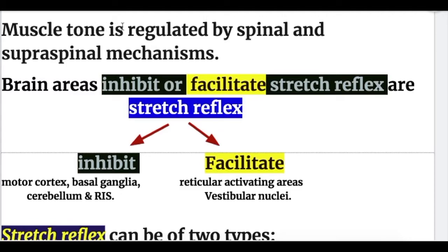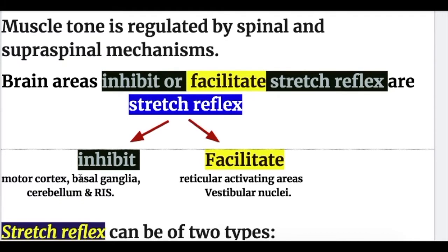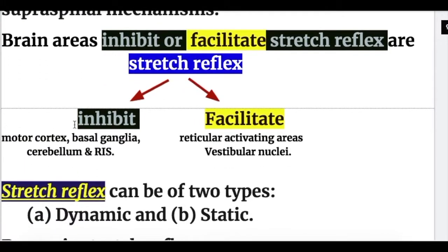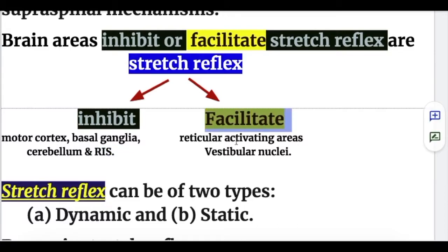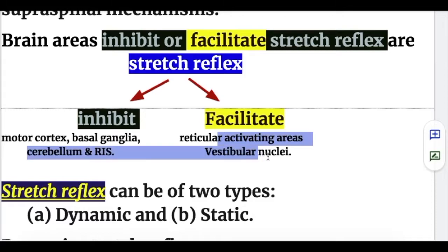Muscle tone is regulated by spinal and supra-spinal mechanisms. Brain areas that inhibit stretch reflexes include the motor cortex, basal ganglia, cerebellum, and reticular inhibitory system; those that facilitate stretch reflexes include the reticular activating system and vestibular nuclei.